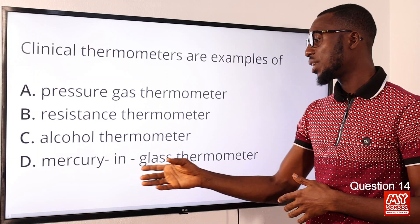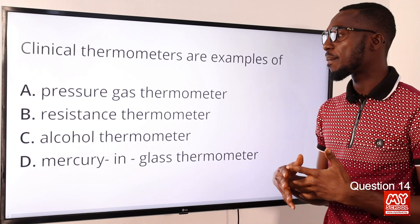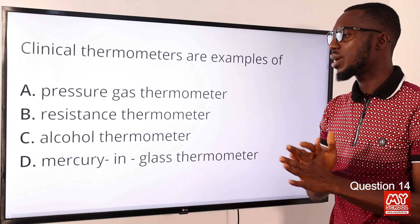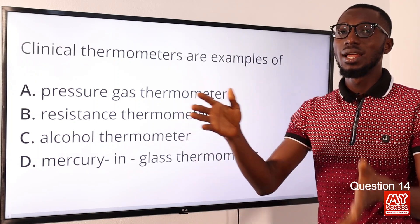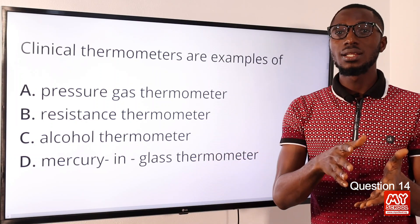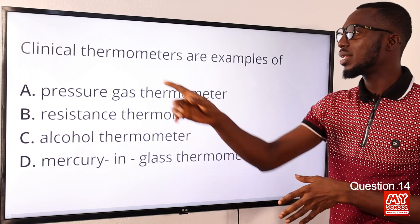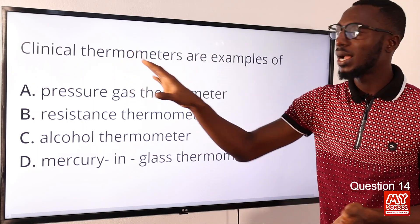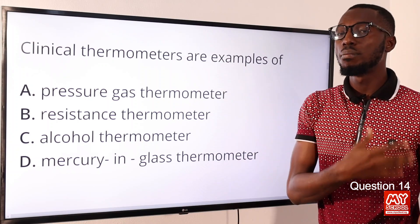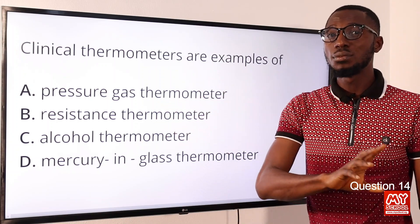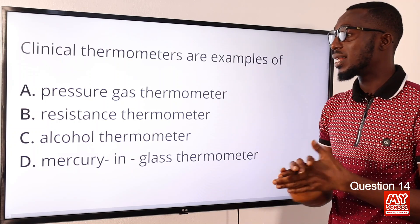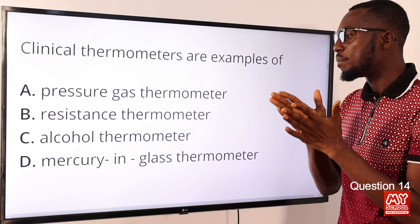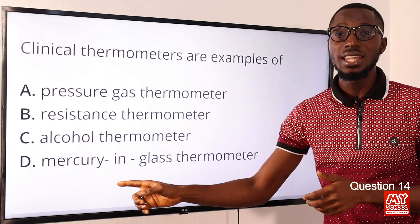Question fourteen: clinical thermometers are examples of mercury-in-glass thermometers. When we talk about types of thermometers, we have liquid-in-glass and gas thermometers. The clinical thermometer uses mercury and is used in hospitals to measure human body temperature, with a range of 35 to 43 degrees, and it has a constriction. The correct option is option D.